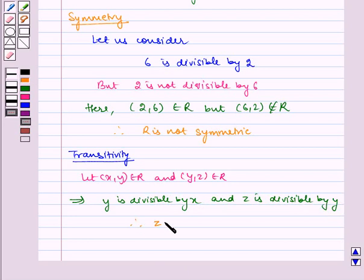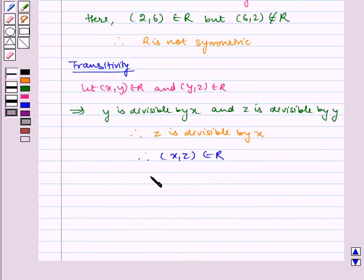Therefore z is divisible by x. Therefore (x,z) belongs to R. Hence R is transitive.